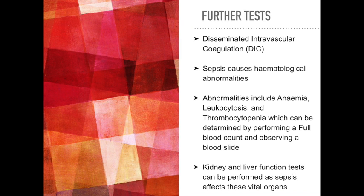As sepsis is a serious condition, further testing should be taken as precautionary action. Testing for disseminated intravascular coagulation, also known as DIC, should be undertaken as sepsis causes haematological abnormalities. These abnormalities include anaemia, leukocytosis, and thrombocytopenia, which can be determined by performing a full blood count and observing a blood slide. In addition, kidney and liver function tests can be performed as sepsis affects these vital organs.